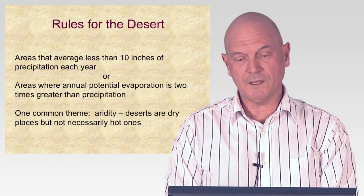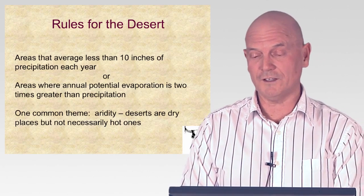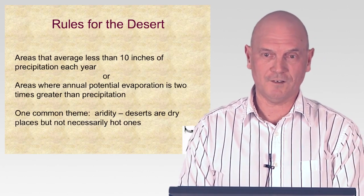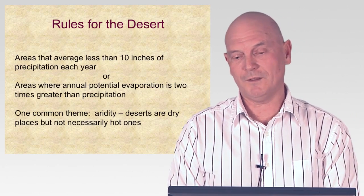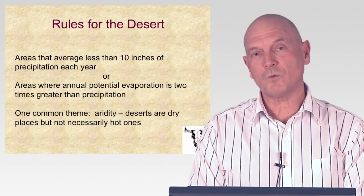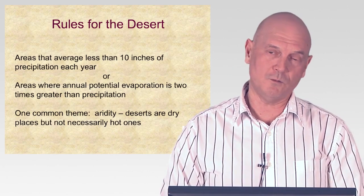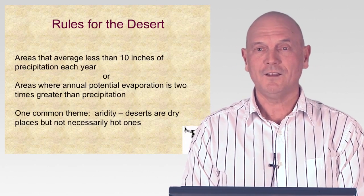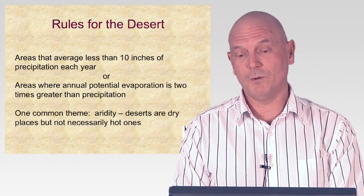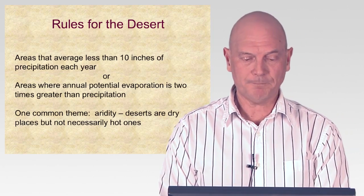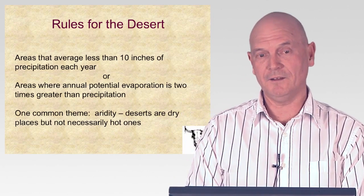Another definition would be if an area has slightly over 10 inches of precipitation but the annual potential evaporation is two times greater than the precipitation. So if they got 20 inches of precip, they may have a potential for 40 or so inches of evapotranspiration. In this area, we have a potential for over 100 inches of evaporation because the humidity is really low, it's really hot, and the majority of days during the year are sunny and warm.